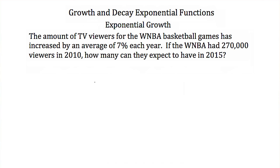So now let's see how we can use exponential growth. Here we're told that the amount of TV viewers for the WNBA basketball games has increased by an average of 7% each year. If the WNBA had 270,000 viewers in 2010, how many can they expect to have in 2015? This is a growth because we're increasing by a percent each year. So we're going to use our exponential growth formula, which again looks like y equals p times 1 plus r to the t.